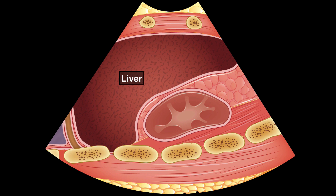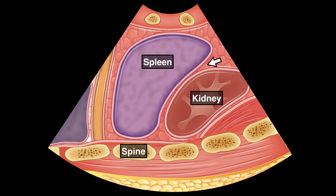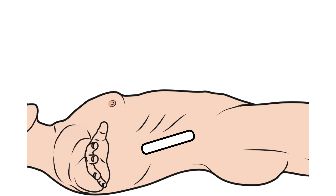For the bladder, sagittal view with indicator towards the patient's head, and transverse view with indicator towards the patient's right side. Similar to our FAST exam, on the right we note the liver, kidney, Morrison's pouch, spine, and diaphragm. On the left we note the spleen, kidney, splenorenal space, and spine. These are similar imaging planes to the FAST exam, but now rather than focusing on free fluid in potential spaces, we're focusing on the kidney itself.